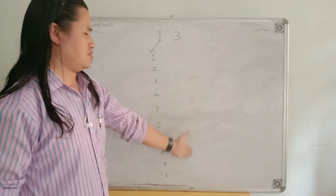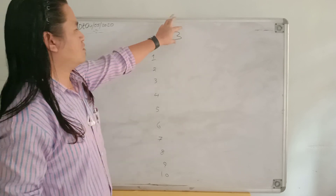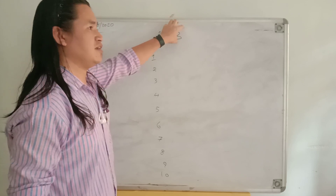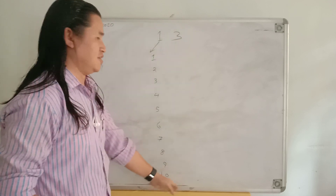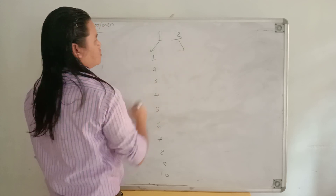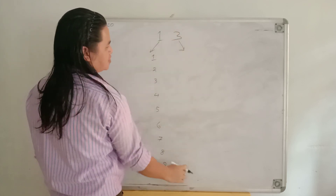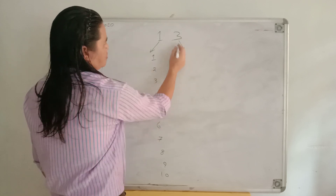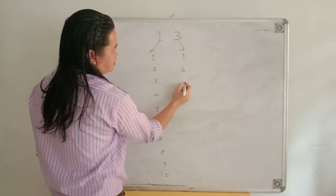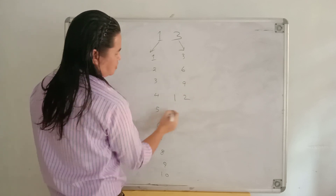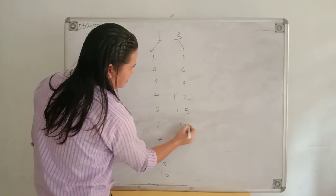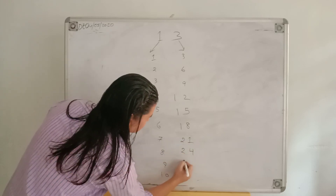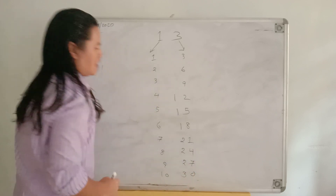Likewise, on the right-hand side we will write the three times table — the number which is here. Whatever single-digit number is on that side, you will write that table on this side. Here is three, so you will write the three times table here. If there is four, we will write the four times table; if there is five, we will write the five times table. So let us write the three times table: three ones are three, three twos are six, three threes are nine, three fours are twelve, three fives are fifteen, three sixes are eighteen, three sevens are twenty-one, three eights are twenty-four, three nines are twenty-seven, and three tens are thirty.